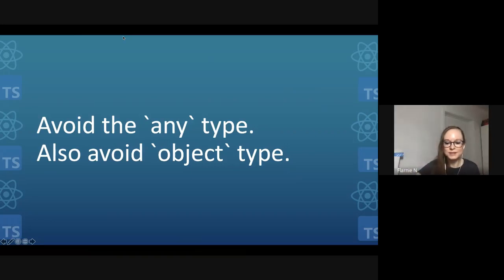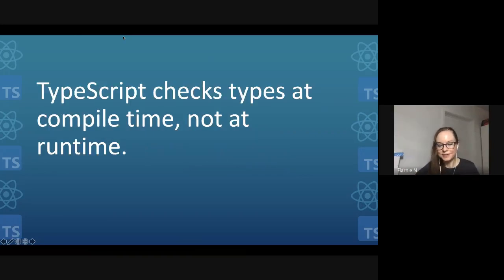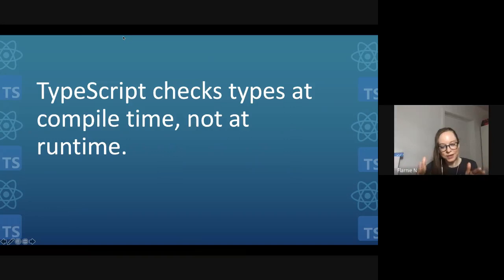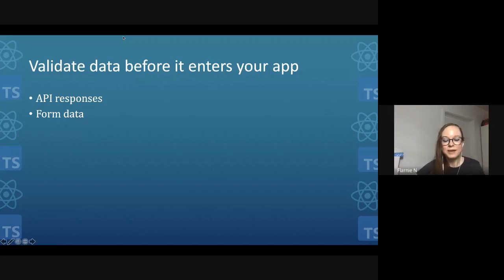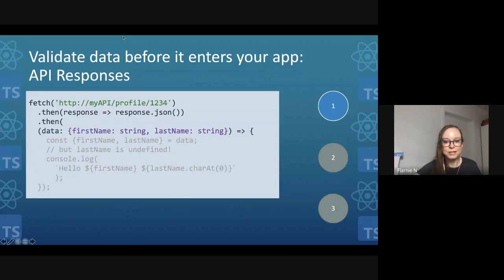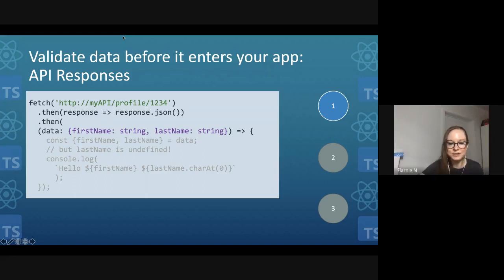The more subtle thing to understand is that TypeScript checks types at compile time and not at runtime. When the browser is running our vanilla JavaScript, there are no more type checks. This means that when our code is actually running and data comes in — like an API response, form data, or SDK calls — that data is not being checked by TypeScript. For example, let's say we're fetching profile data from an API and we expect a first name and last name that are both strings, but the developer didn't realize last name could be undefined.